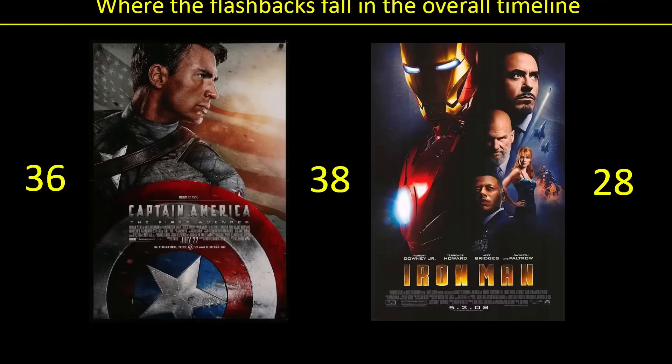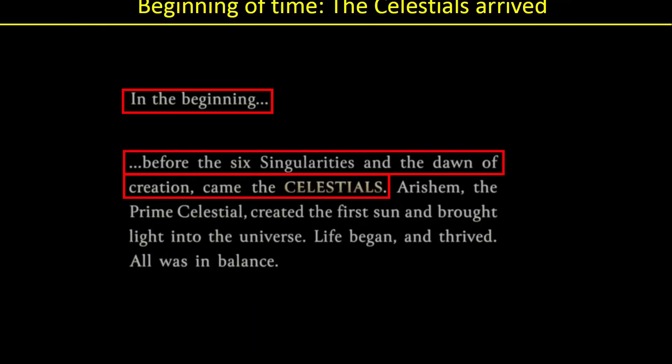So I mentioned the dawn of time — that's where we're going to start. The beginning of time with the Celestials' arrival. In the Eternals movie, we get the crawl that gives us tons of information. The first paragraph that comes up is so important: in the beginning, before the six singularities — which will eventually become the Infinity Stones — and the dawn of creation, i.e. the Big Bang, came the Celestials. We don't know where they came from or why they were created, but the very first thing is the arrival of the Celestials.